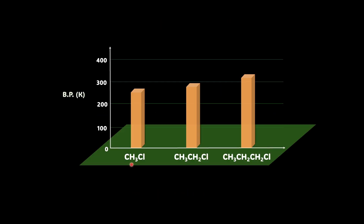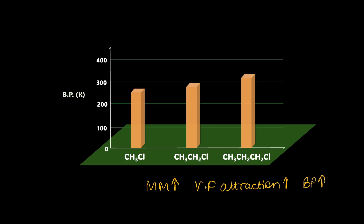Let's take alkyl halides: methyl chloride, ethyl chloride, and propyl chloride. One carbon is increasing, so the molar mass is increasing. Larger molecules have more polarizable electron clouds, leading to stronger temporary dipoles and thus stronger intermolecular attraction. The boiling point increases — methyl chloride has the least boiling point and propyl chloride has the highest.